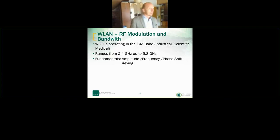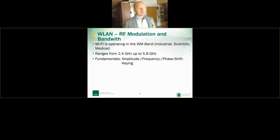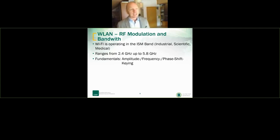Wi-Fi is generally operating in the Industrial, Scientific, and Medical (ISM) band — 2.4 to 5.8 GHz. It was first introduced by the FCC through US regulation, and later by the EPC, which is the European regulation body.